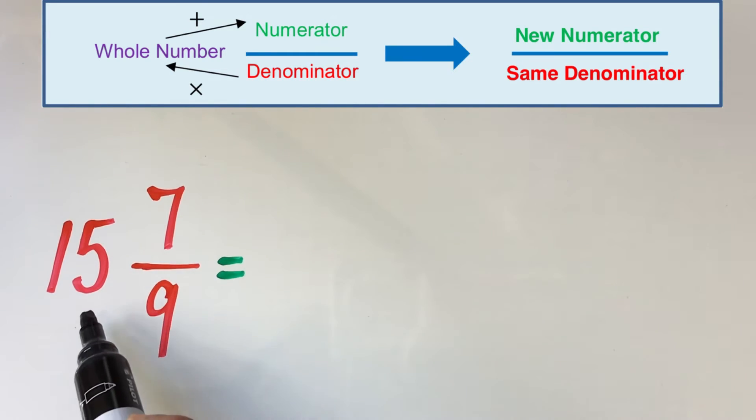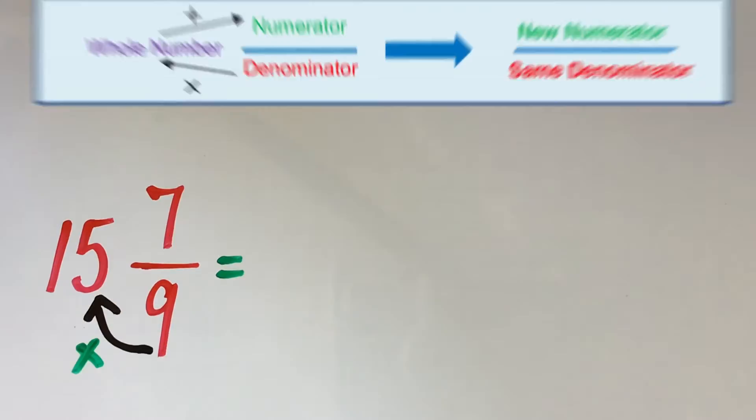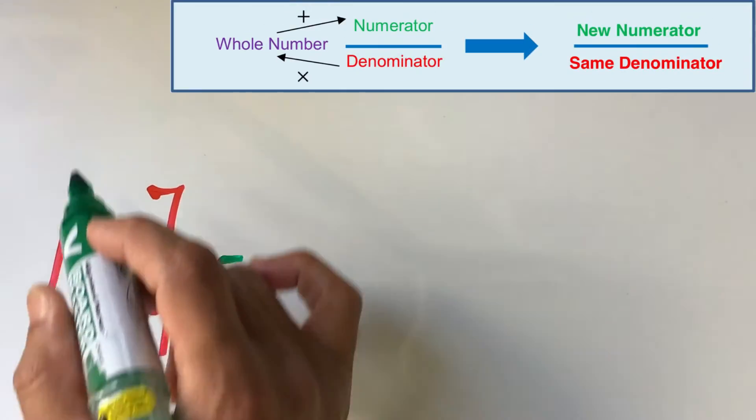In this example, to convert 15 whole 7 over 9 into an improper fraction, we first multiply the bottom number or the denominator of the fraction with the whole number. 9 multiplied by 15 gives us 135.